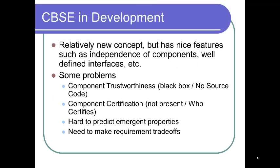Component-based software engineering is a relatively new concept with nice features such as independence of components with well-defined interfaces. Some problems include component trustworthiness — since components are black boxes and completely opaque, you can't see the source code. Component certification is oftentimes not present, and you don't know who certifies them. It's also hard to predict emergent properties, and you need to make requirement trade-offs. Still, they've been able to build things such as electronic commerce applications based on components.